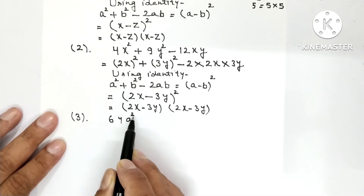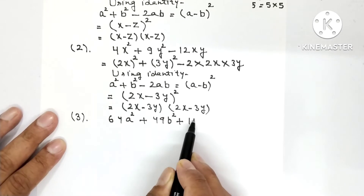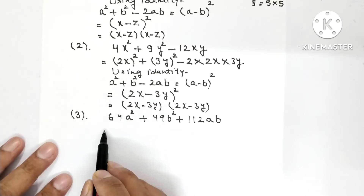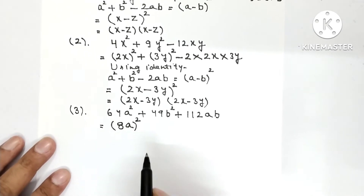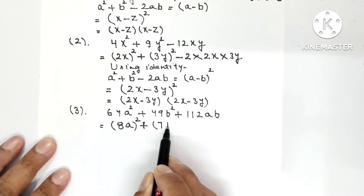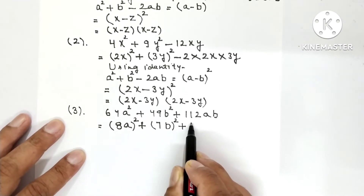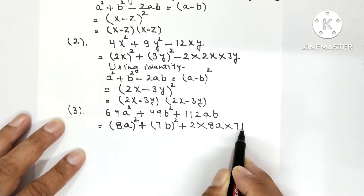Question 3: 64A² + 49B² + 112AB. Think about 64A²: 64 is the square of 8 and A² is the square of A, so write (8A)² — that is a². Then 49 is the square of 7 and B² is the square of B, so write (7B)² — that is b². In your mind: a² + b² + 2ab, where 2 × a × b = 2 × 8A × 7B.